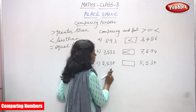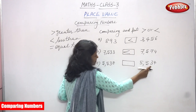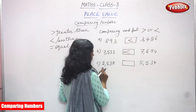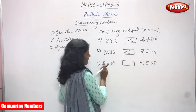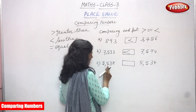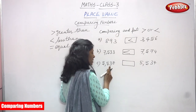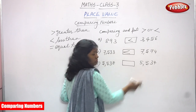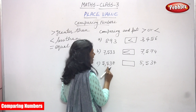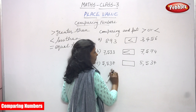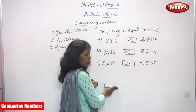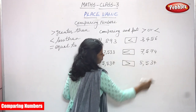Next, move on to the tens place: here 3 tens and here also 3 tens — both the same. Now we check the ones place: here 8 and here 4. So 5538 is the greater number compared with 5534. We use the wider mouth symbol — 5538 is greater than 5534. This is the right greater-than symbol.